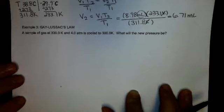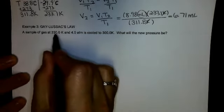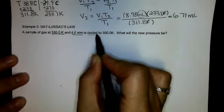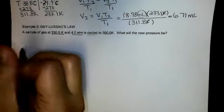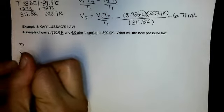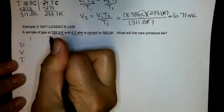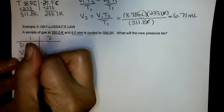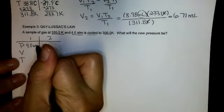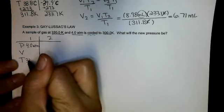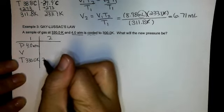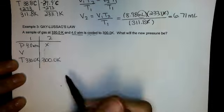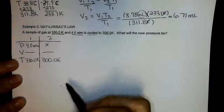My third example is Gay-Lussac's Law. I have gas at 330 Kelvin and 4 atmospheres. It's cooled to 300 Kelvin. So I have pressure, volume, temperature, 1 and 2. My first pressure is 4 atmospheres at 330.0 Kelvin. It's cooled to 300.0 Kelvin. I want to know my new pressure. Volume didn't change.